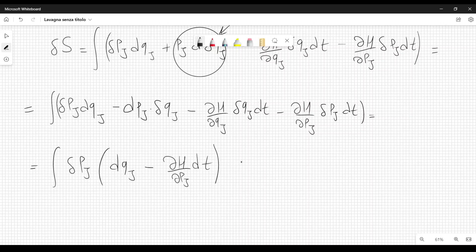And then we have minus integral variation of q j dp j times dp j plus derivative of the Hamiltonian with respect to q j dt.